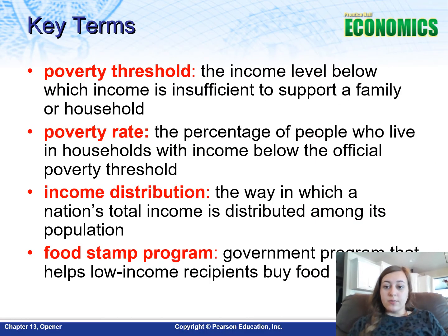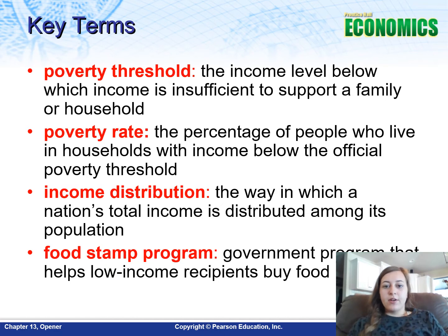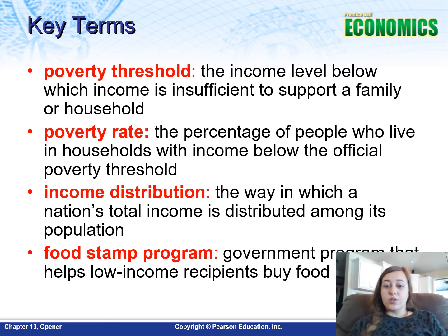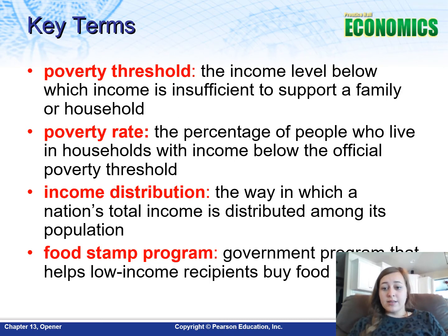Some key terms for this section: the poverty threshold is the income level below which income is insufficient to support a family or household. The poverty rate is the percentage of people who live in households below the official poverty threshold. Income distribution refers to the way a nation's total income is distributed amongst its population. The food stamp program is a government program that helps low-income families buy food.